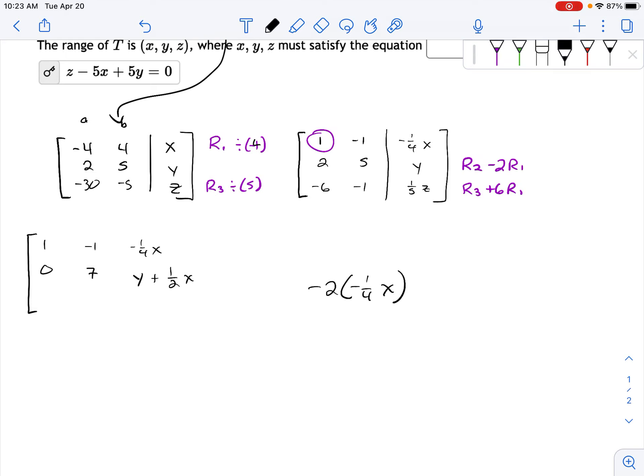And then the bottom row becomes negative six plus six. Negative one plus five times that gives you negative one, or I'm sorry, minus six times that gives you negative seven.